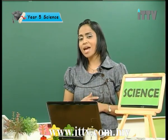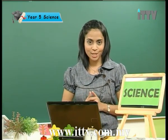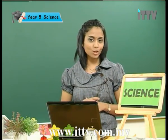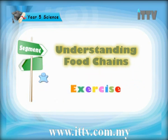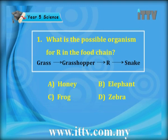From the beginning of the lesson, we have learned about classes of animals — herbivores, carnivores and omnivores — and that the food chain is the relationship between producers which are the plants and consumers which are animals and humans. Now let's move to the exercise. Question 1: what is the possible organism for R in the food chain? The food chain starts with grass, then the grasshopper is eaten by R, and lastly R is eaten by the snake.